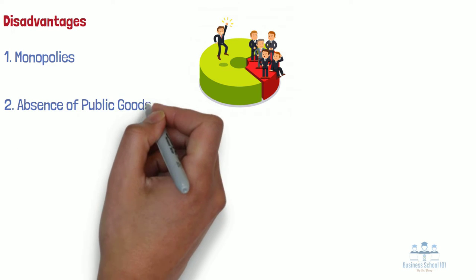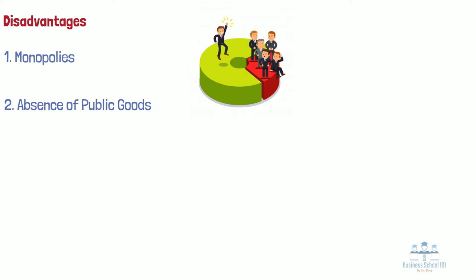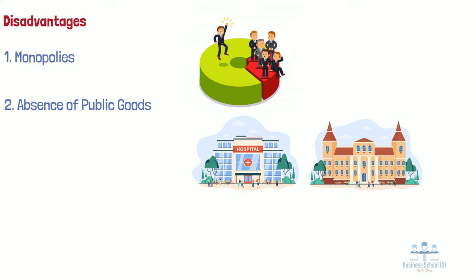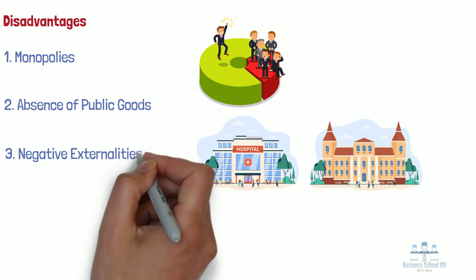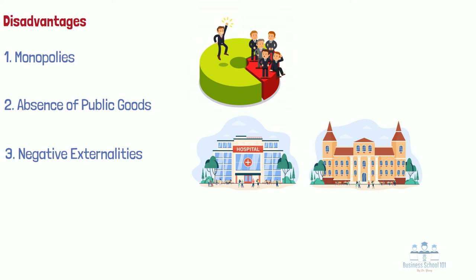Number two, absence of public goods. In a pure market economy, public goods like free healthcare and education don't exist because all hospitals and schools are run by private enterprises driven by profit. This could ultimately lead to many people being unable to access such services because they can't afford them. Number three, negative externalities. When there are no regulations or restrictions, companies are free to produce negative externalities such as pollution. For example, the 2010 Deepwater Horizon oil spill was largely attributable to the use of substandard cement and other cost-cutting measures. If there are no laws to limit a firm's air, water, or waste pollution, then society as a whole pays for the consequences.